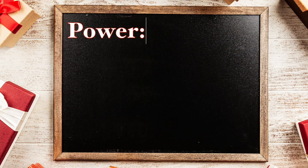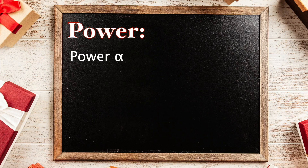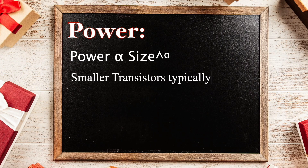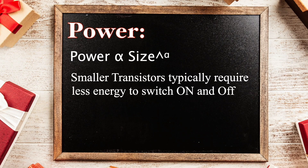Second is power. Power consumption of a chip is influenced by various factors, including the size of transistors. With smaller transistors, the power consumption per transistor decreases. The relationship between transistor size and power consumption is shown, where alpha is a constant factor representing the power scaling factor. Typically alpha is less than 1, indicating that power decreases as transistor size reduces.